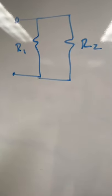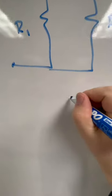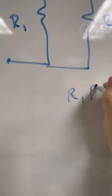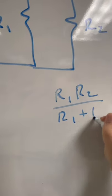If I have exactly two resistors in parallel, then their equivalent resistance is R1, R2 over R1 plus R2.